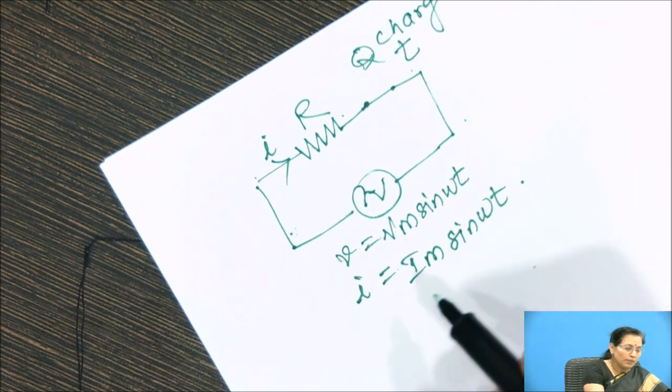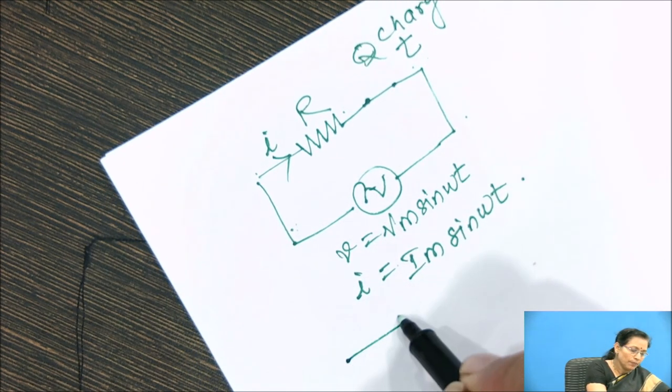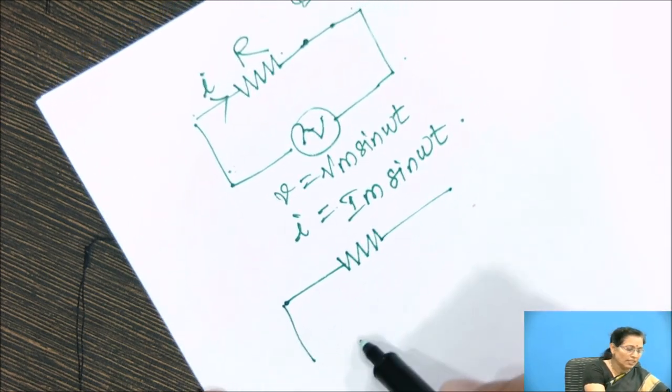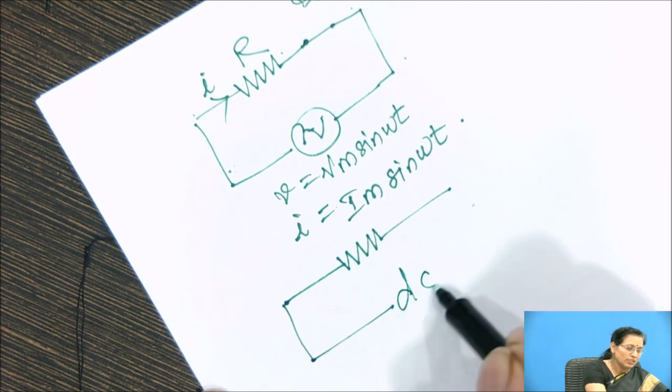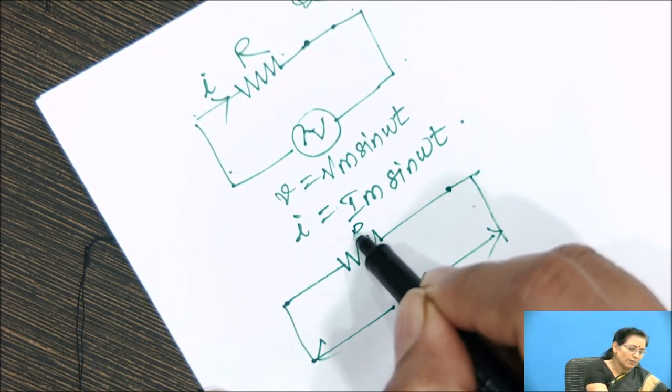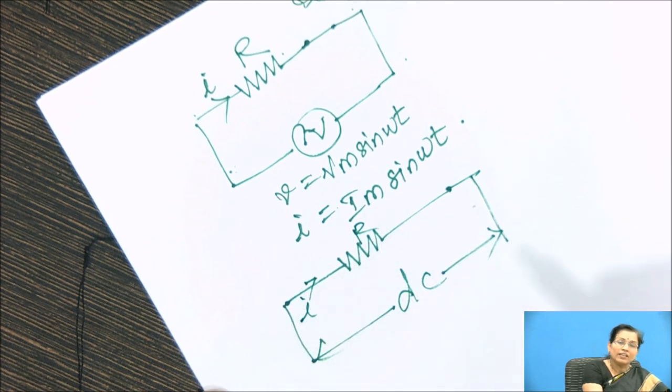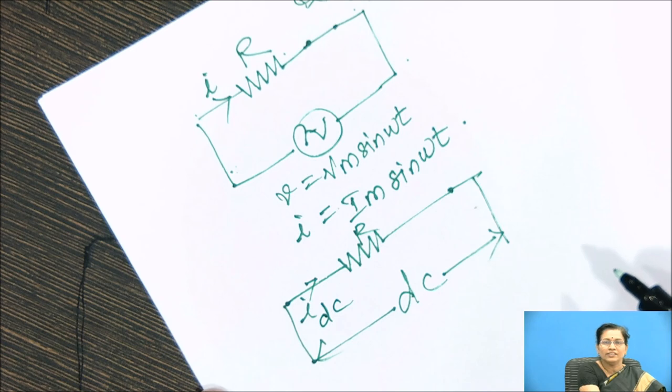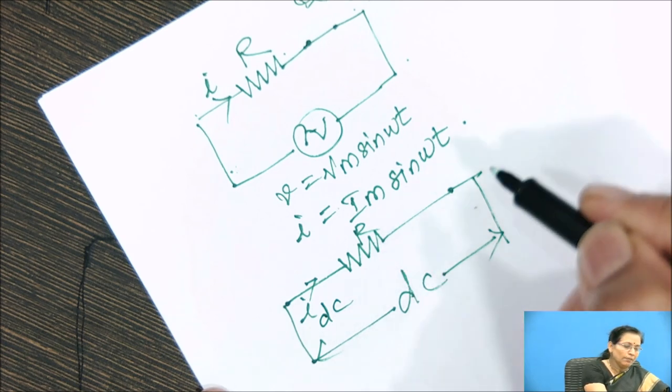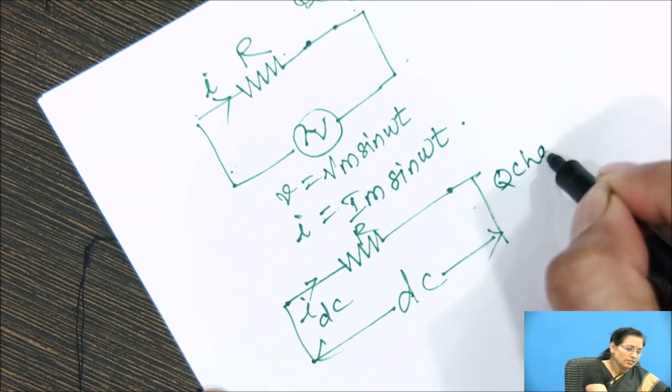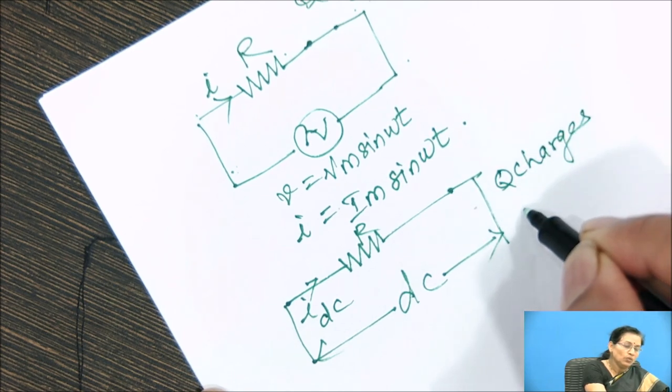Now replace this AC voltage. The same circuit is considered here. Replace this AC voltage by a DC source, by a DC voltage to the same circuit. I current flows through the circuit, I DC. We can consider that I DC. Again measure the Q charges move in the circuit in time t seconds.